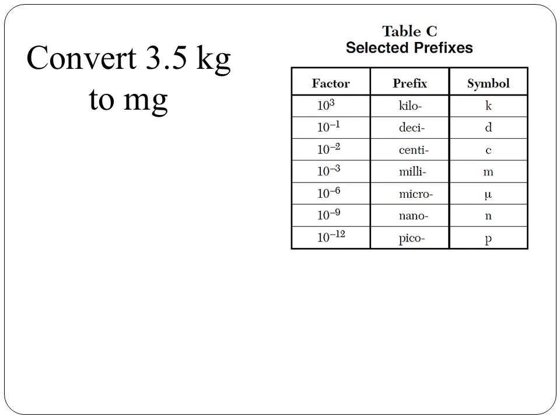We are going to use reference table C for some simple metric conversions. For example, convert 3.5 kilograms to milligrams. When looking at reference table C, we are going to look at the exponent for the prefix kilo, and then look at the exponent for the prefix milli. The exponent for kilo is 3, and the exponent for milli is minus 3. The difference between 3 and minus 3 is 6. This is going to tell me the number of places to move my decimal point in my conversion.